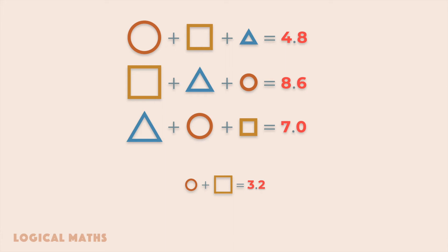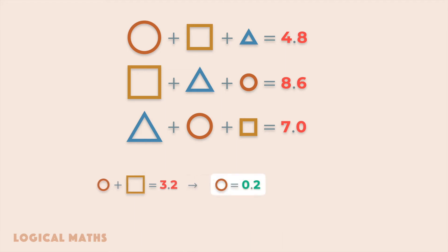As the value of the small figure is less than 1 and the value of the medium figure is a positive integer, we come to the conclusion that the small circle represents the number 0.2 and the medium square represents the number 3.